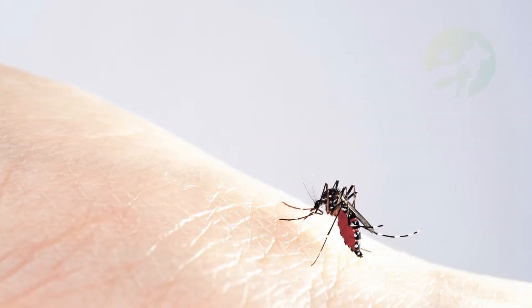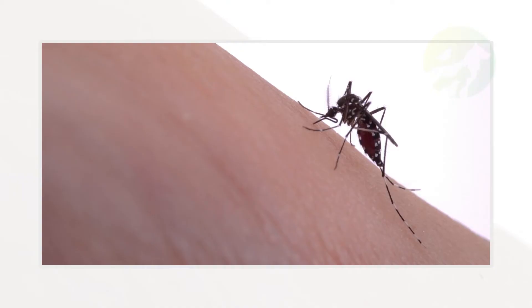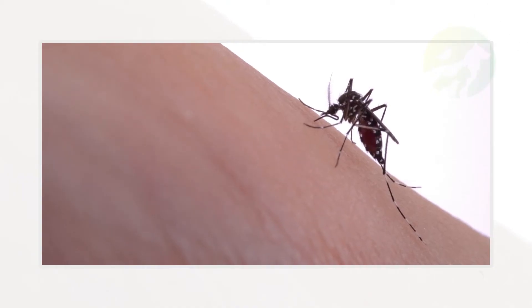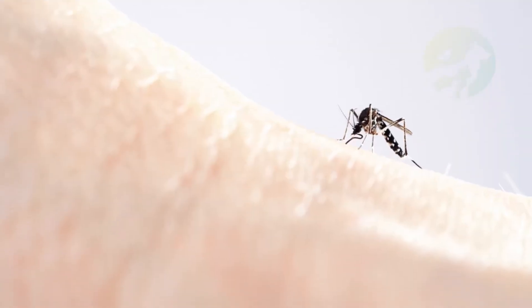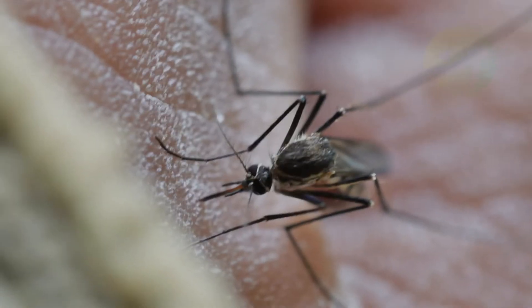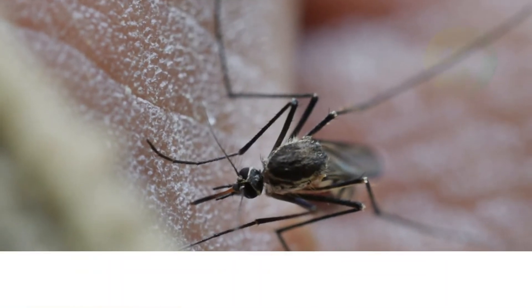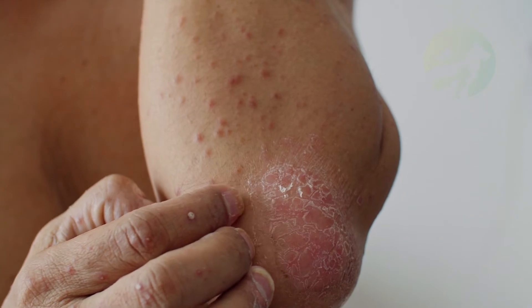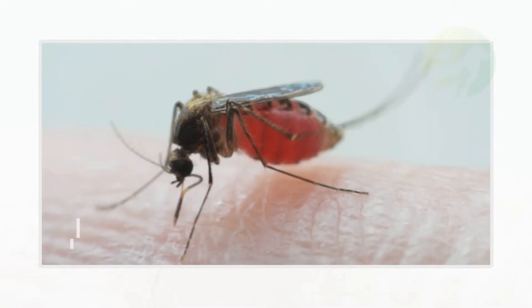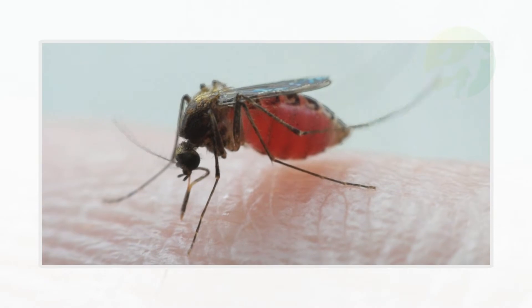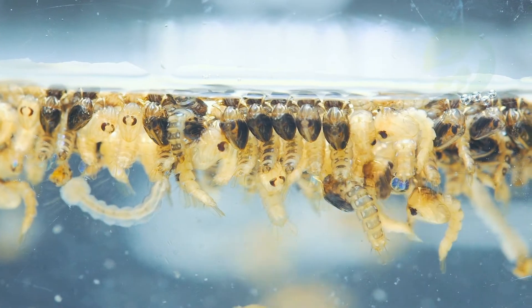Mosquitoes are believed to have evolved about 170 million years ago. The first known record occurred during the Jurassic period, 199 to 144 million years ago, with the oldest known fossil being from the Cretaceous, 144 to 65 million years ago. They are believed to have evolved initially in South America, spreading northward from the Laurasian continent and returning to the tropics from the north.